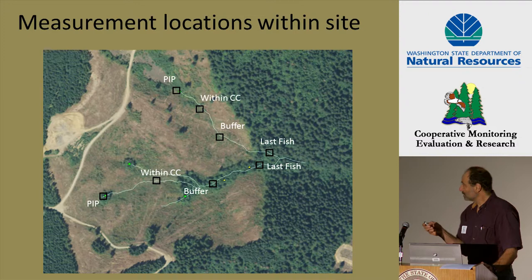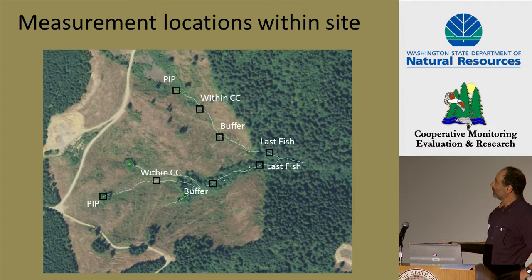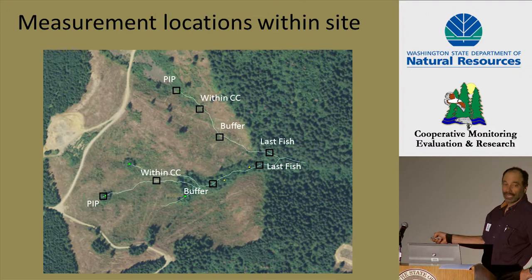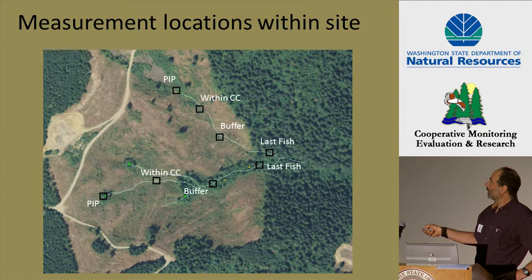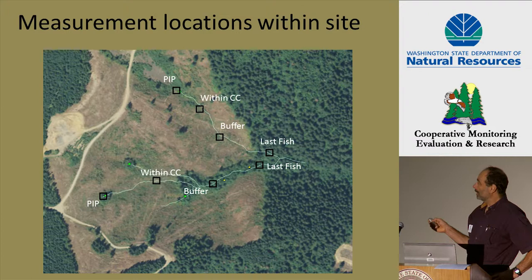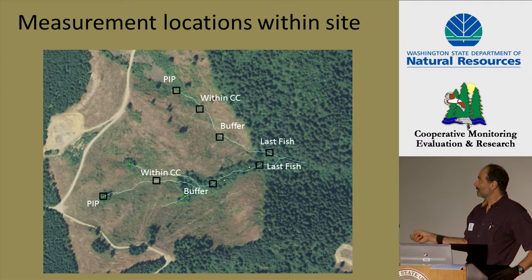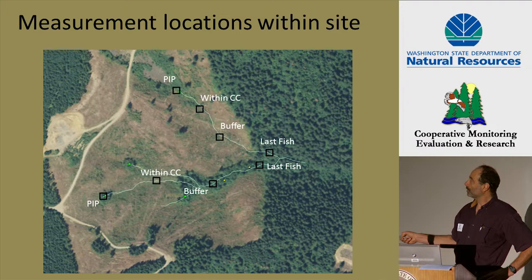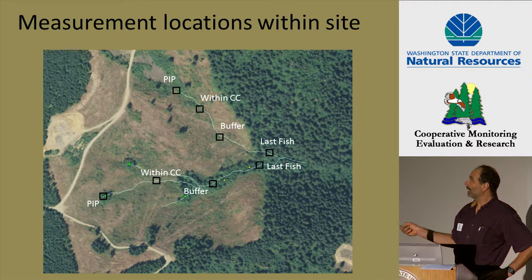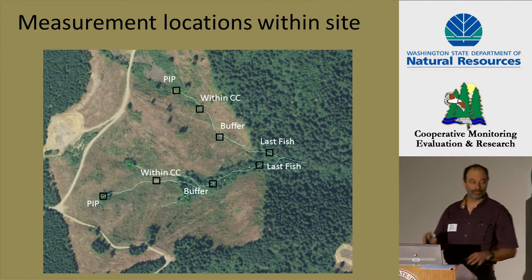Here are two basins with the divide running through. This is the Forest Practices buffer here in the South Cascades. Last fish is down here, and shade measurements were taken all along the main channel at equally spaced intervals from the PIP all the way down to last fish. For the 0% buffer we did measurements both pre- and post-harvest — two years pre- and at least two years post. Shade measurements were taken at a minimum of four locations per basin: at the last fish point, the upper part of the buffer, within the clear-cut area, and as close as possible to the PIP.